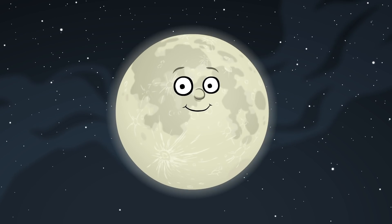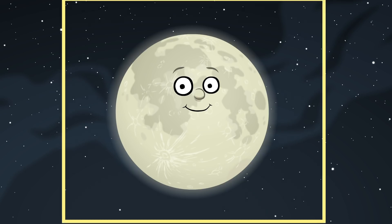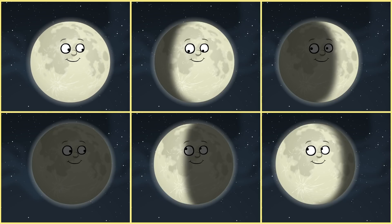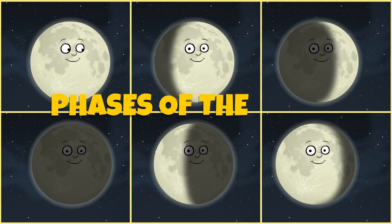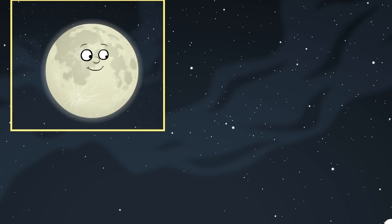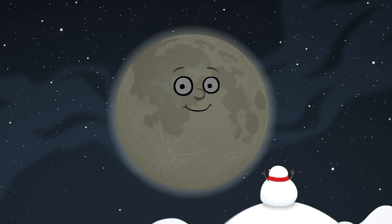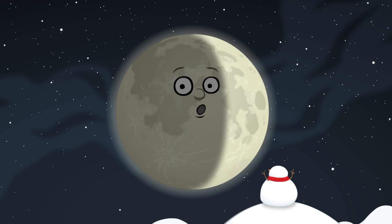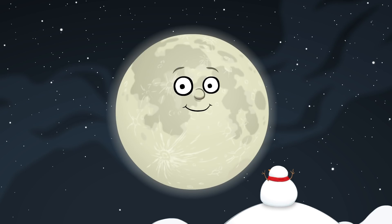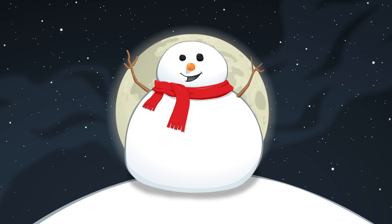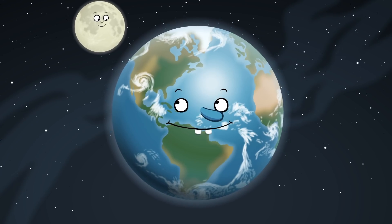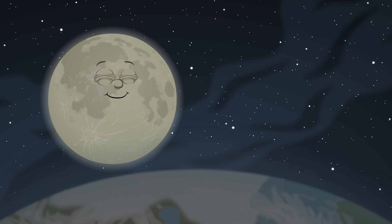The moon also comes in different shapes and sizes. These different shapes of the moon are called phases of the moon. Some of the phases of the moon are the new moon, the crescent moon, or the full moon. The full moon is big and round like a big round snowman.